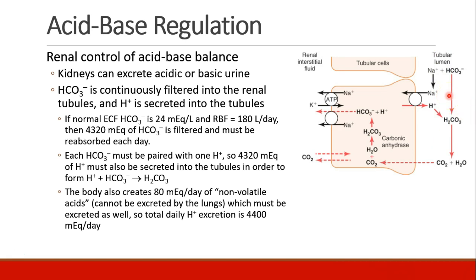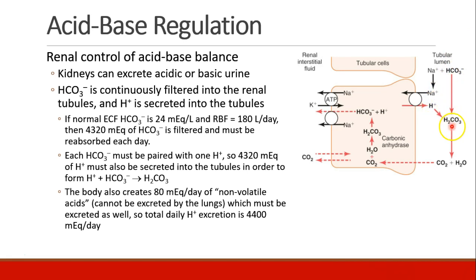We can't be losing all of that bicarbonate — it has to get reabsorbed. If you didn't save it, you would become very acidotic. So the body moves hydrogen ions secreted into the renal tubule: each bicarbonate gets paired with one hydrogen ion to form carbonic acid. That means 4,320 milliequivalents of hydrogen ion have to be secreted into the tubules every day in order to save all of that bicarbonate. And that's the job of the kidneys.